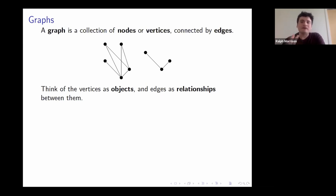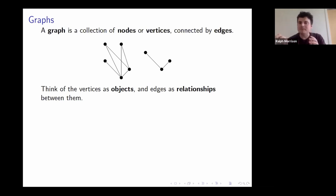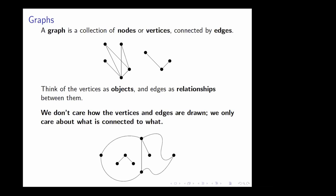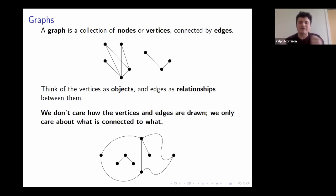In terms of how you should interpret this, think of vertices as being objects, people, or locations — some kind of object. Edges encode a relationship between those objects; two objects are related precisely when there's an edge connecting them. An important thing about graphs — a little odd depending on what kind of math you're used to — is that we really don't care what the picture of our graph looks like. We don't care about the geometry. All we care about is what is connected to what: which dots do we have and how are they connected to each other.